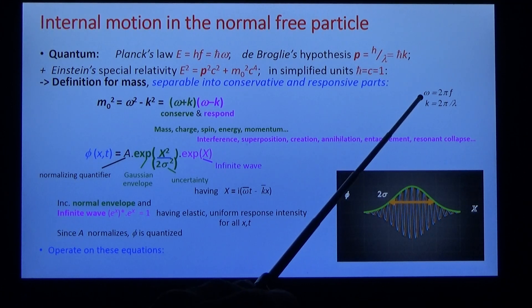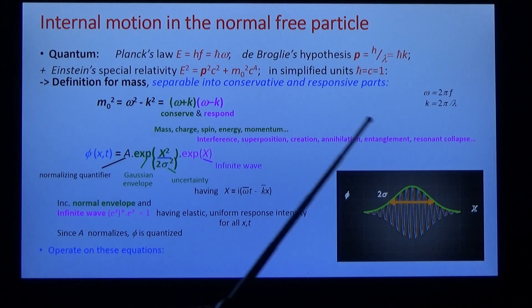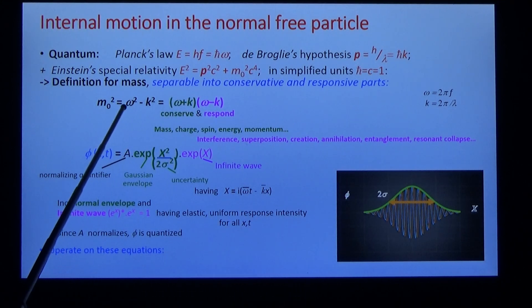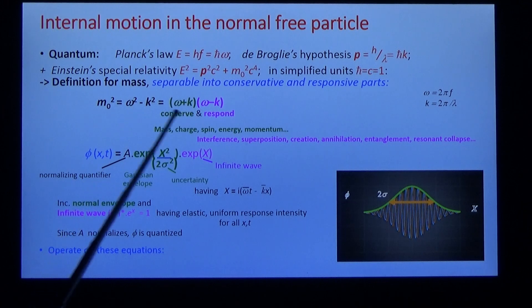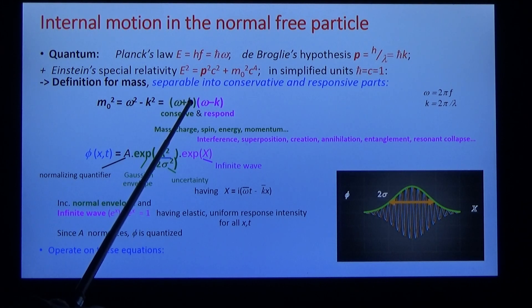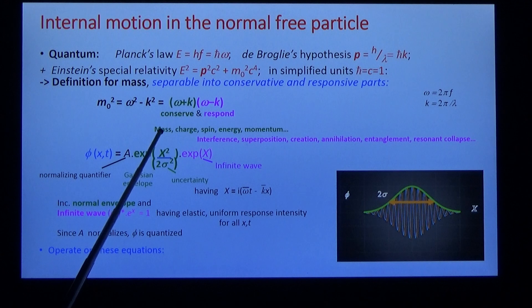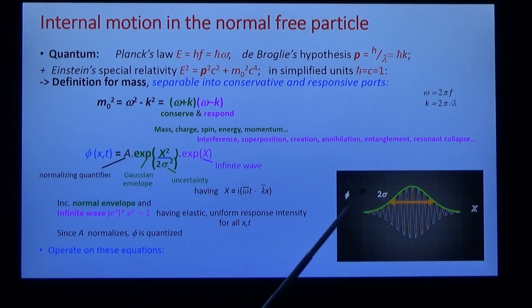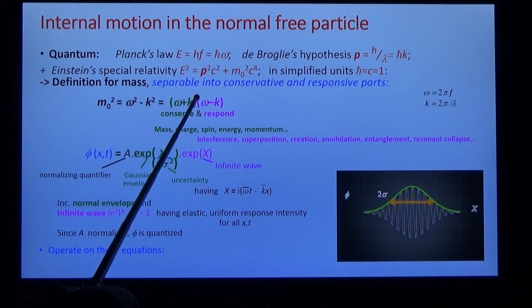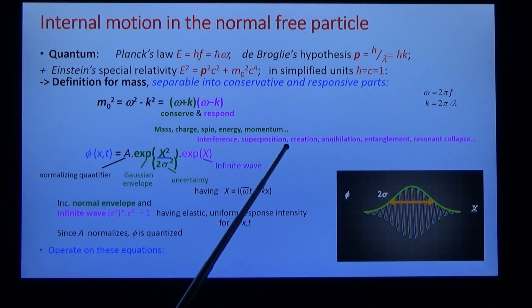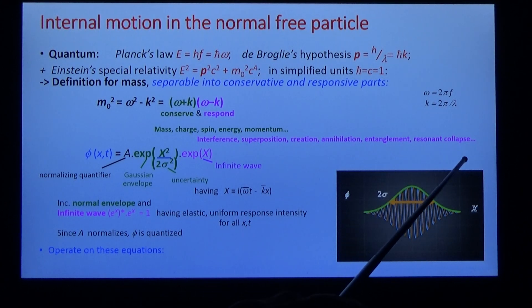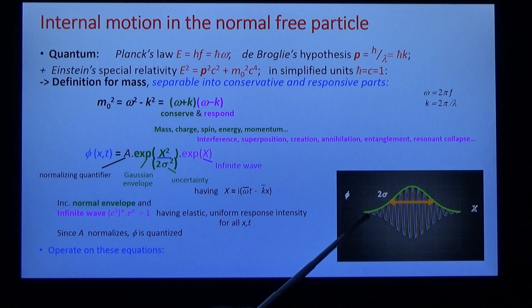Omega is the angular frequency and K is the wave vector. This equation separates into two: a conservative part which describes mass, charge, spin, energy, momentum—it's the envelope of the wave packet—and a responsive part which describes interference, superposition, resonant collapse, which is an infinite wave with unit amplitude for all x and t.